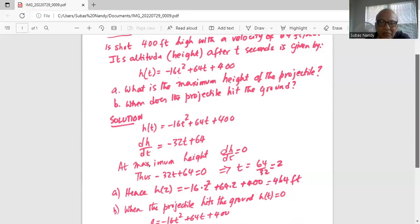So the question is, what is the maximum height of the projectile? So we want to find h of 2. That is, we want to take the value of the independent variable t as 2. So it is minus 16 times 2 squared plus 64 times 2 plus 400, which works out to 464 feet. That is the maximum height of the projectile.